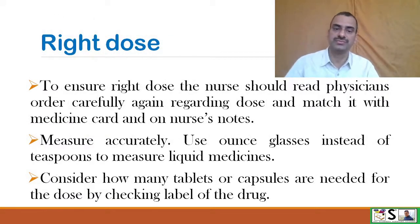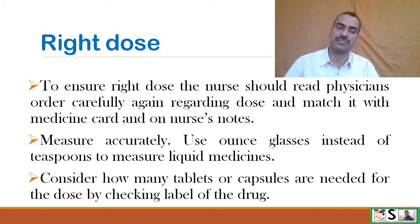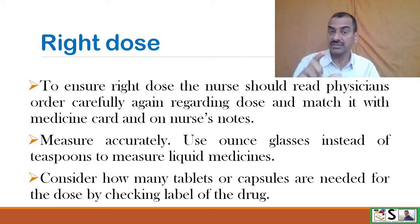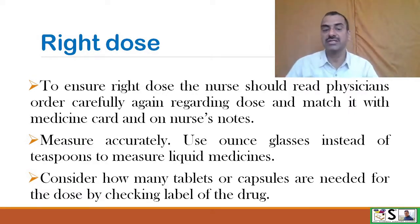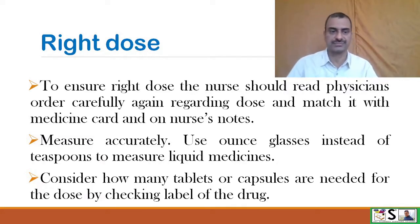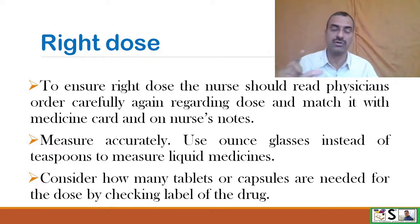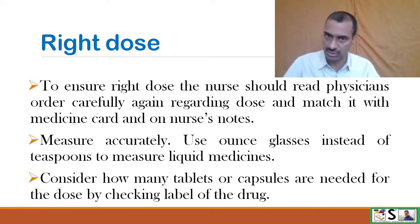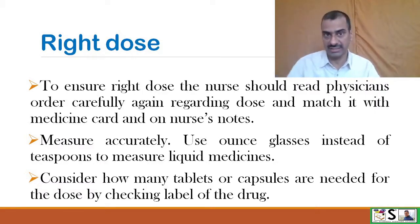To ensure right dose, the nurse should read the physician's order carefully regarding dose and match it with the medication card and nurse's notes. Not only the name of the medication but the dose should also be right. Measure the dose accurately and use ounce glands instead of teaspoon to measure liquid medicines. Consider how many tablets or capsules are needed for the dose by checking the label. For example, if you have to give 500 mg and the label shows 100 mg per tablet, then you have to take out 5 tablets.